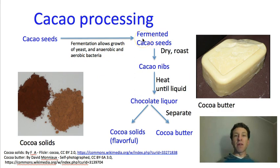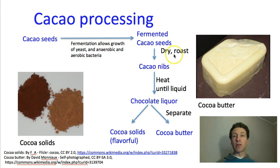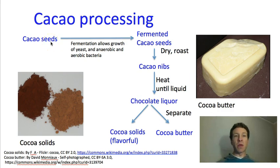After fermentation, we have fermented cacao seeds. The next step is to dry them, and once dry, to roast them — which will again change the chemistry and develop the flavors. The dry roasted product is called cacao nibs, and you can buy cacao nibs at health food stores. They will not be sweet unless sugar has been added, because cacao seeds themselves are actually bitter. The sweetness only comes from adding sugar at the very end of the process, so don't buy cacao nibs expecting a sweet snack unless the ones you're buying have sugar added.